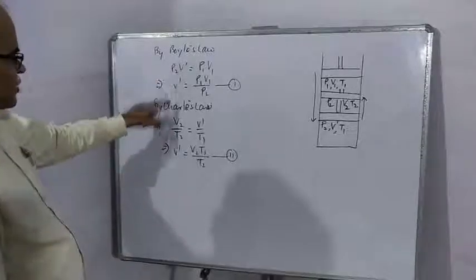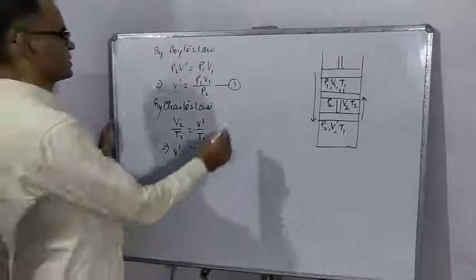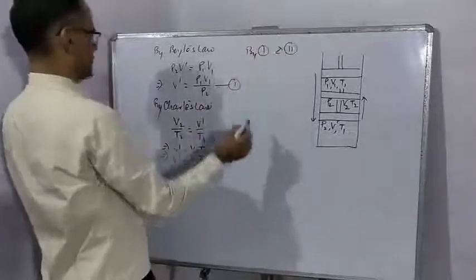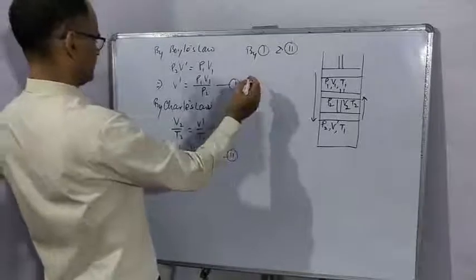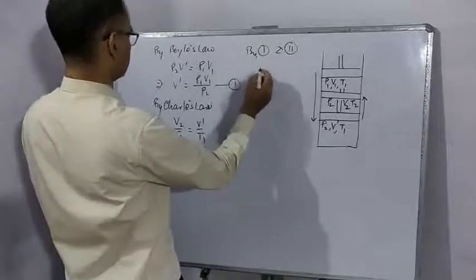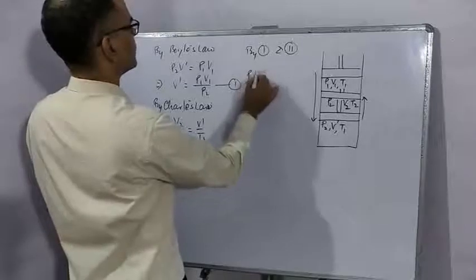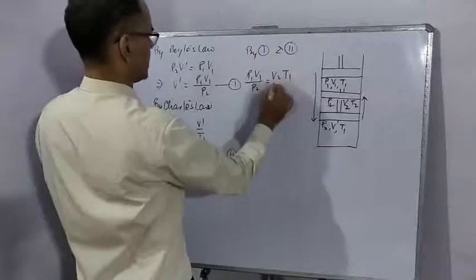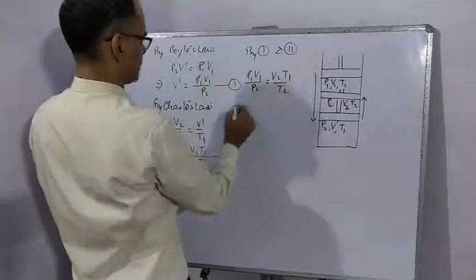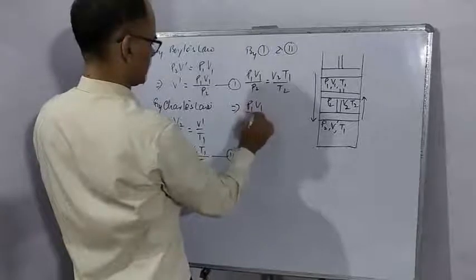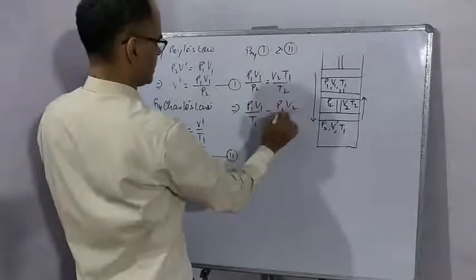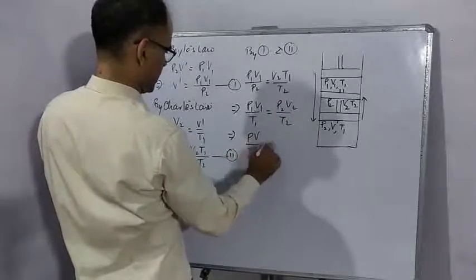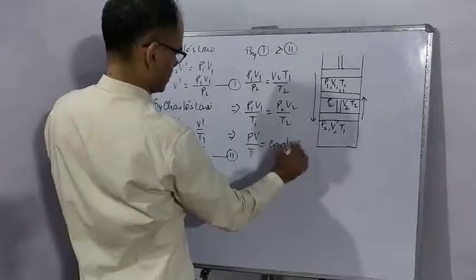Now equate values of V-dash from both equations. P1 V1 upon P2 is equal to V2 T1 upon T2, or we can write P1 V1 upon T1 is equal to P2 V2 upon T2, or PV upon T is equal to constant.